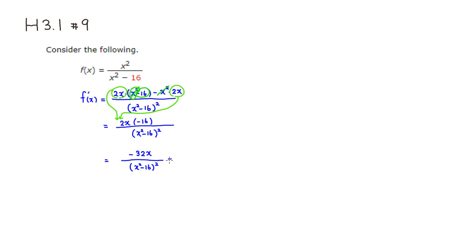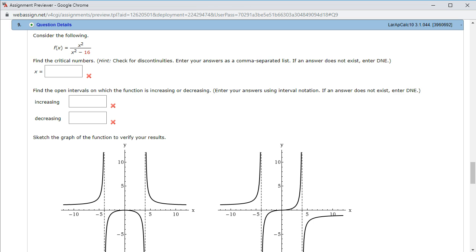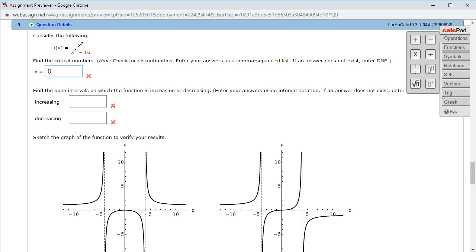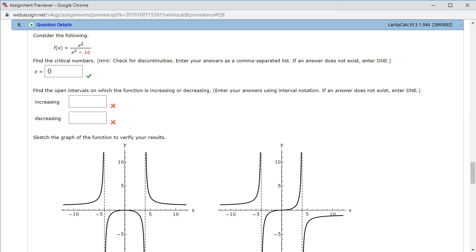First we set that equal to 0 to find the critical number. We need to set the numerator equal to 0, then divide through by negative 32 to get x = 0. So x = 0 is the critical number of the first kind. Let's type it in — we just get 0. That looks like we got the critical number correctly.